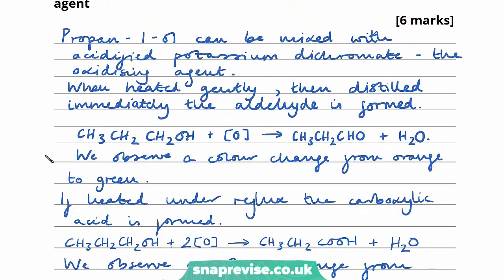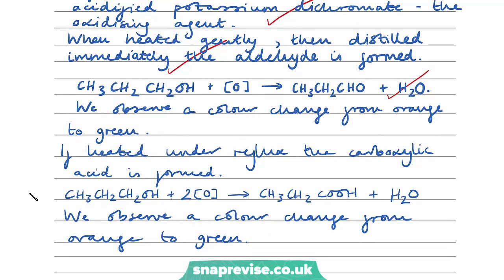This question carries six marks. Let's go through our answer and see where each of those six marks comes from. The first mark comes from mentioning a suitable oxidizing agent — in this case, acidified potassium dichromate. Two marks are held for discussing the partial oxidation to the aldehyde: the first for explaining that we need to heat gently then immediately distill, and the second for a correct equation showing the oxidation of our primary alcohol to our aldehyde. Two marks are held for our second situation, where our primary alcohol is oxidized to form our carboxylic acid — one mark for explaining we must heat under reflux.